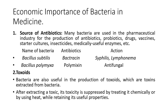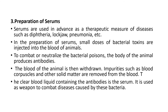For example, Bacillus subtilis produces the antibiotic bacitracin, which is effective against syphilis and Leptospira. Bacillus polymyxa produces polymyxin as an antibiotic and it is antifungal in action. Secondly, bacteria are useful in the production of toxoids — toxins extracted from bacteria after which the toxicity is suppressed by treating it chemically or by heat, while retaining its useful properties, such as in the preparation of serum.